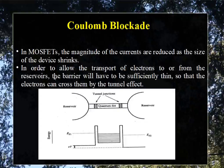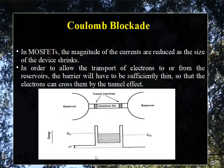In order to allow the transport of electrons to or from the reservoirs, the barrier will have to be sufficiently thin. When the barrier thickness becomes very thin, tunneling will be more. The electrons will be trapped inside the quantum dot. The quantum dot is collecting electrons or charge carriers, so the quantum dot will have capacitance and will act as a capacitor.